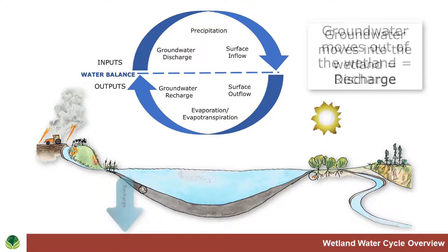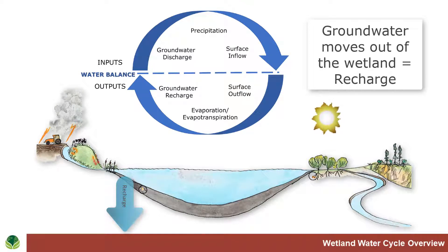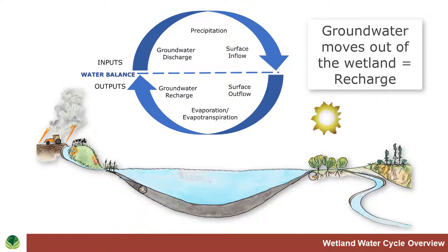When it moves down in a vertical direction into the sediments, it's called groundwater recharge or infiltration, depending on the situation. Eventually, it will hit an impervious layer and the movement will be slowed.